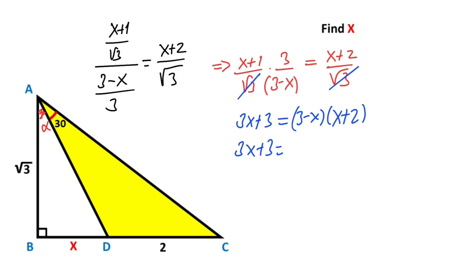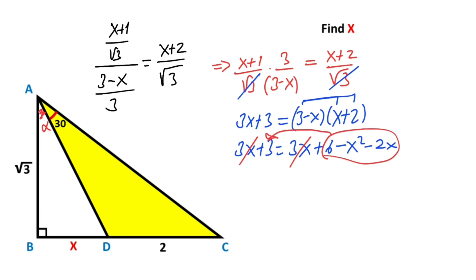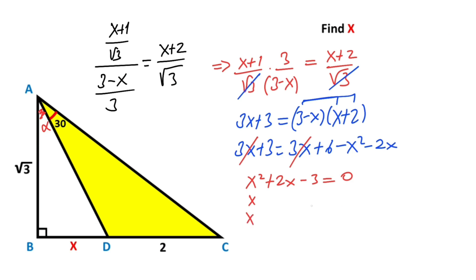Distributing the right side: 3x + 3 equals 3x + 6 − x² − 2x. Moving all terms to the left-hand side gives x² + 2x − 3 = 0. Factoring: x² = x·x and −3 = 3·(−1), so (x + 3)(x − 1) = 0. Since x cannot be negative, x equals 1.